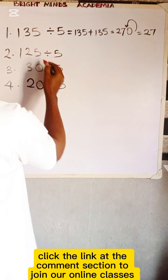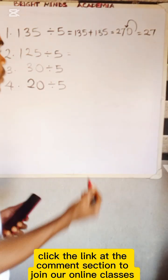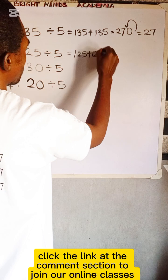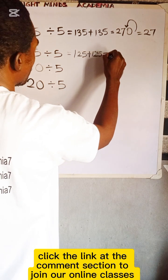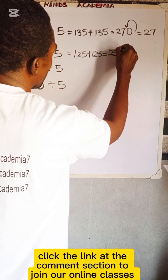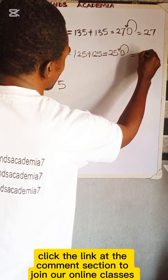125 divided by 5 is 125 plus 125, which gives you 250. Then move the decimal point to the left once, and you have 25.